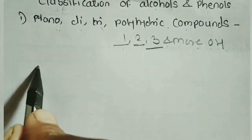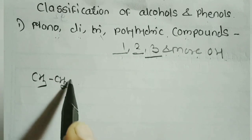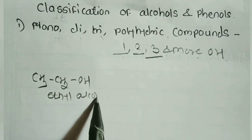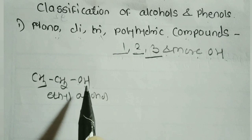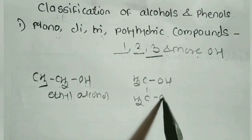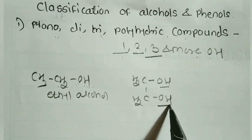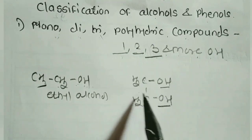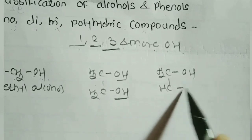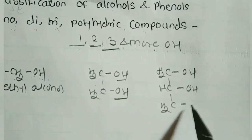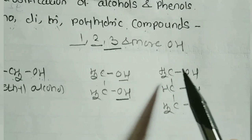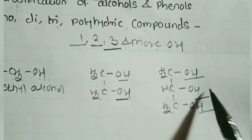For example, CH3–CH2–OH is ethyl alcohol — it has only 1 OH group, so it is a monohydric alcohol. Second example: CH2OH–CH2OH has 2 hydroxy groups attached to saturated carbons, so it is a dihydric alcohol. Third example: CH2OH–CH2OH–CH2OH has 3 hydroxy groups attached to saturated carbon atoms, so it is called a trihydric alcohol.